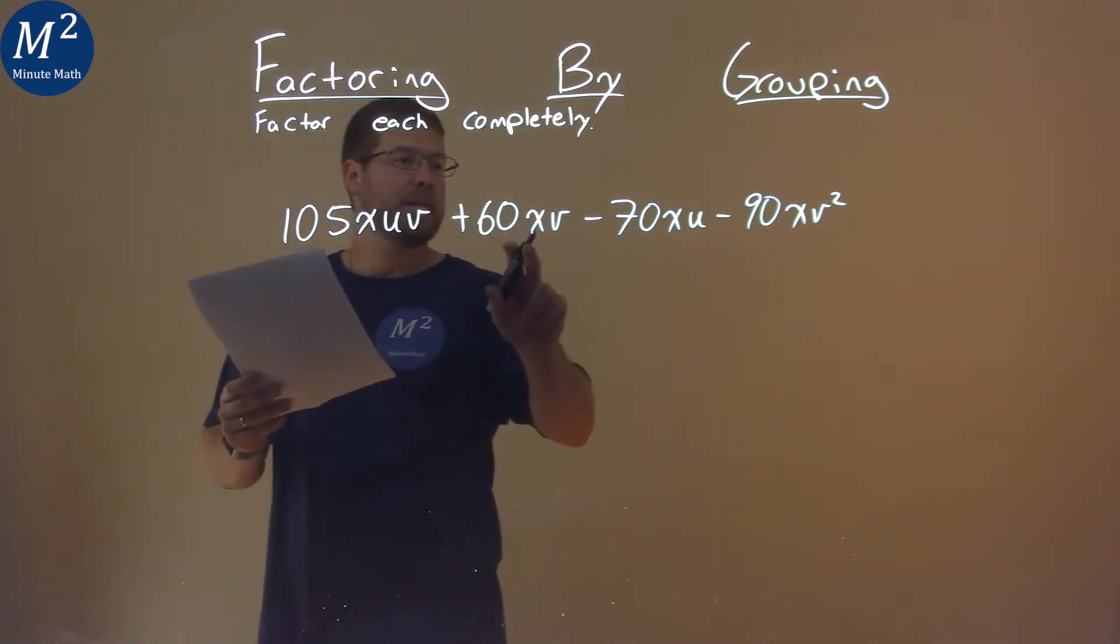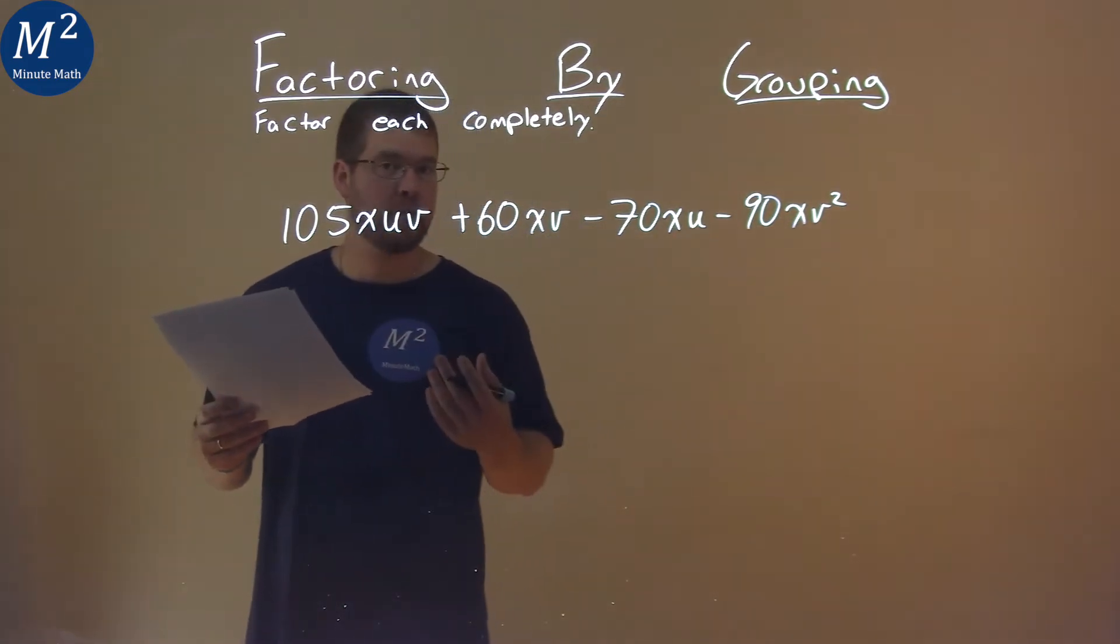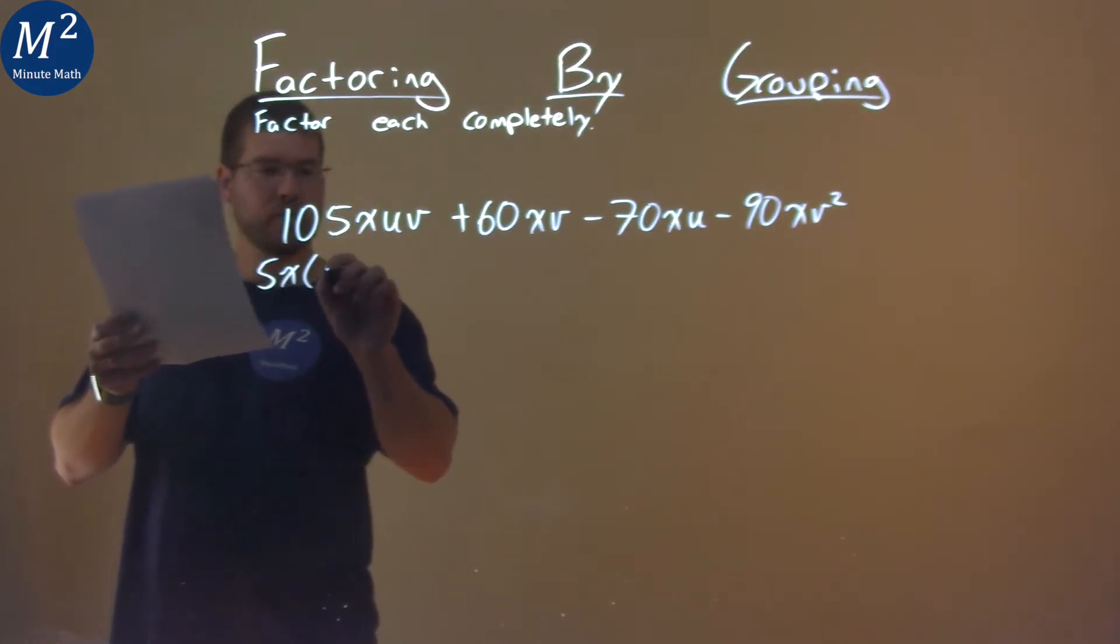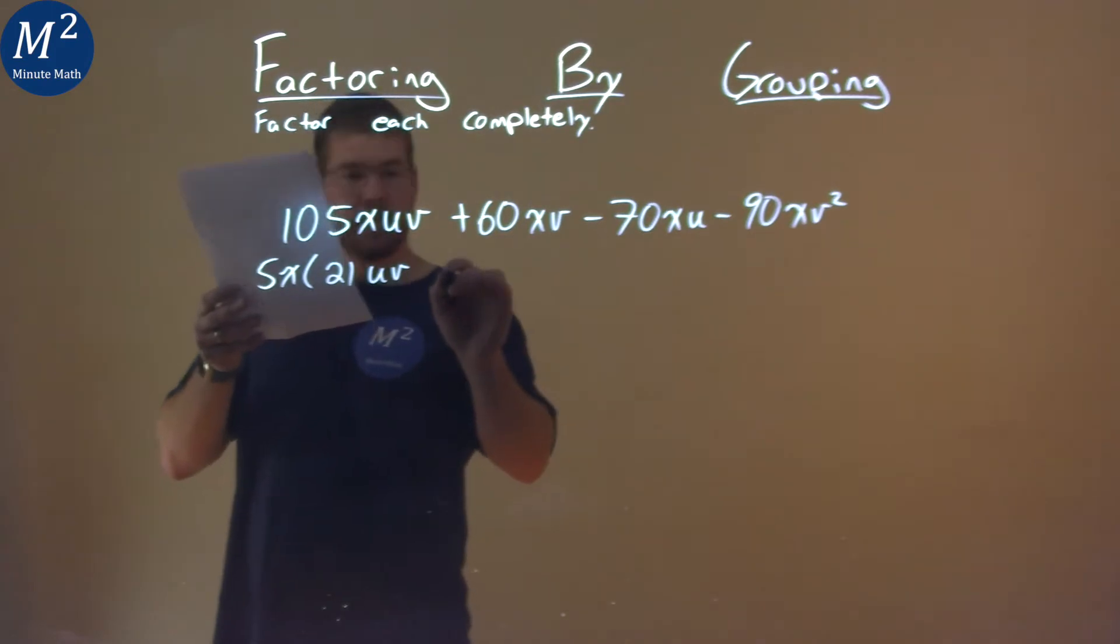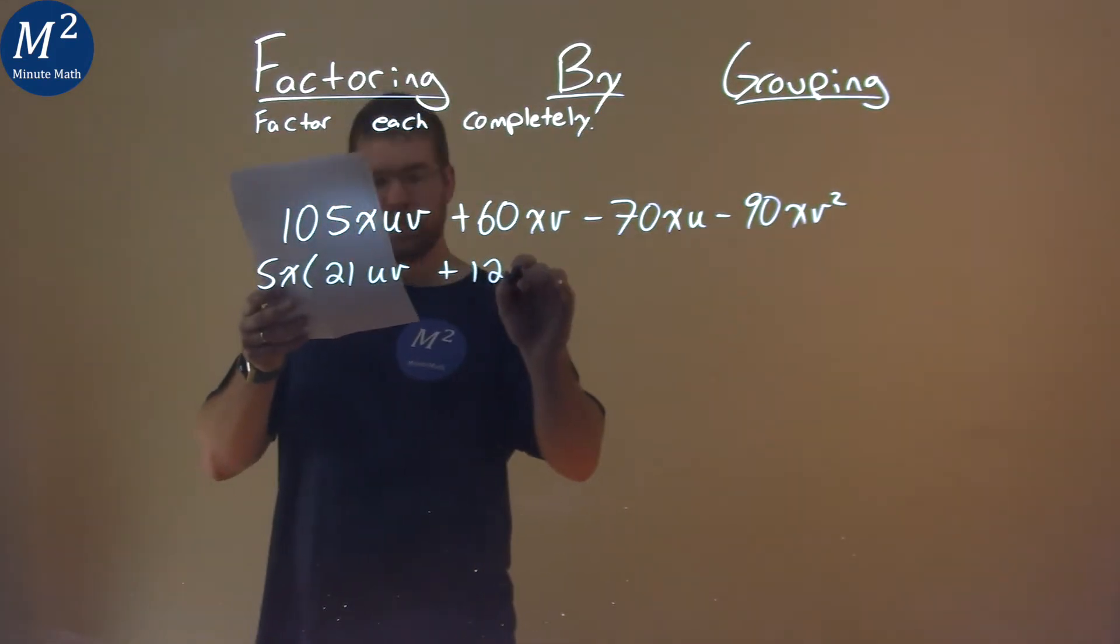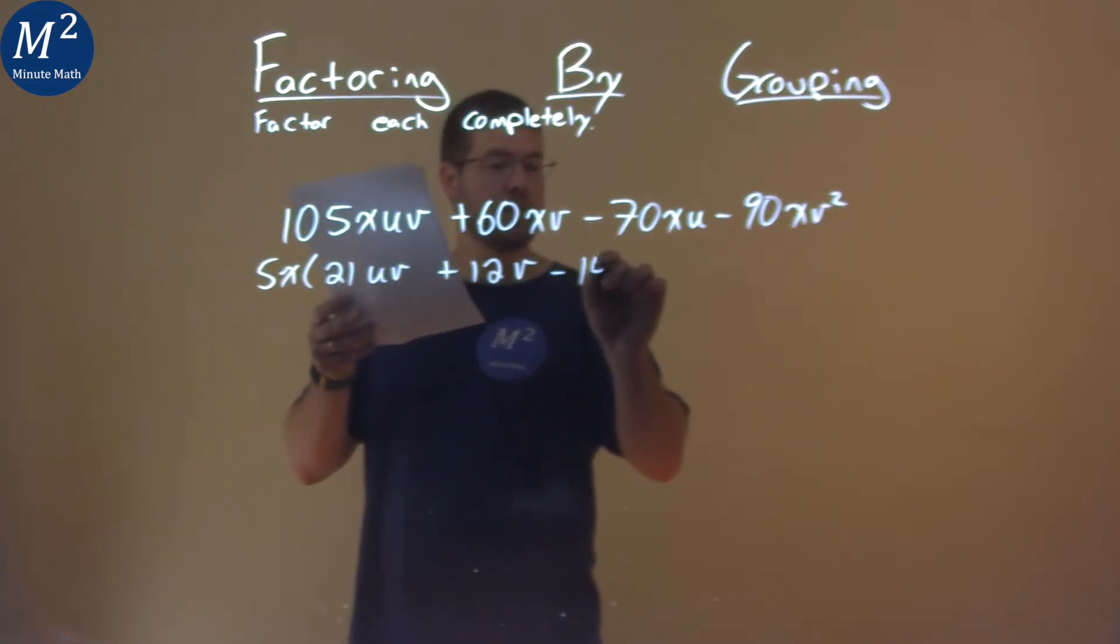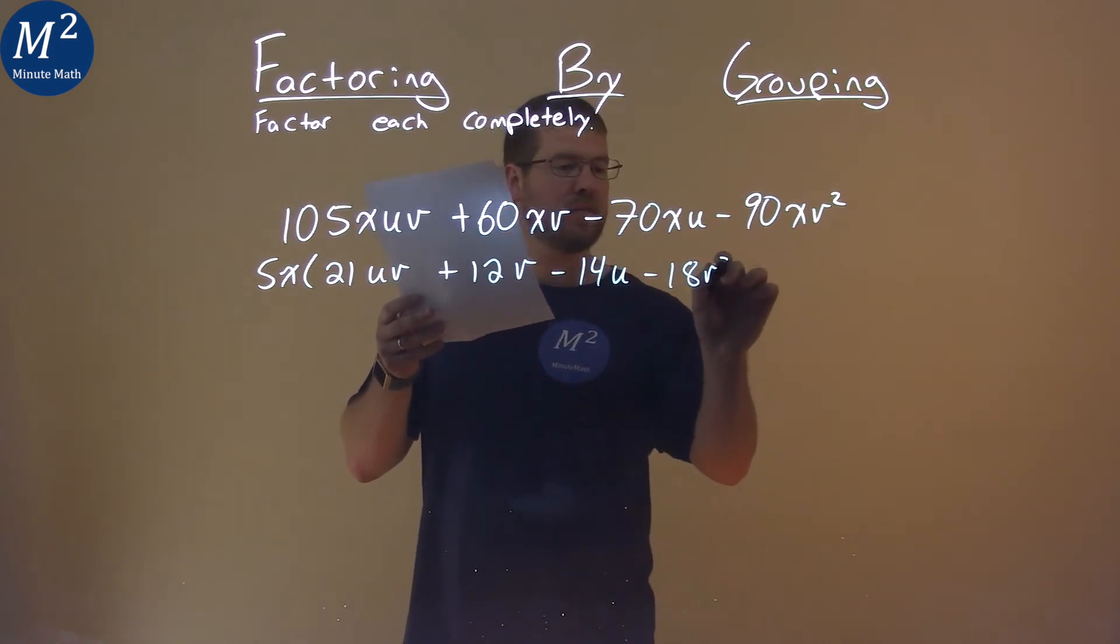I'm going to pull out something that's common here. I see an X in each term as well as 5. So I pull out a 5X and I'm left with 21UV plus 12V minus 14U minus 18V squared.